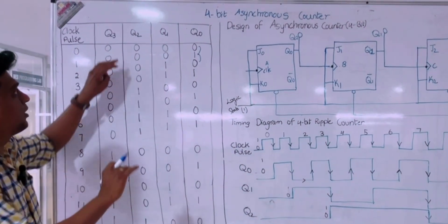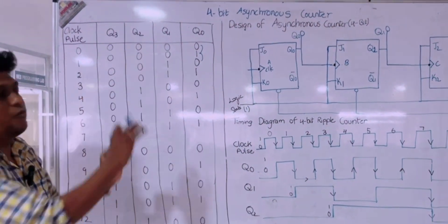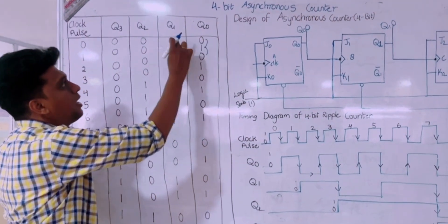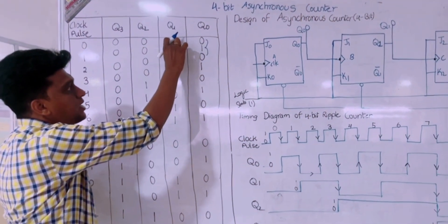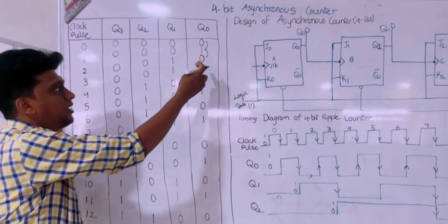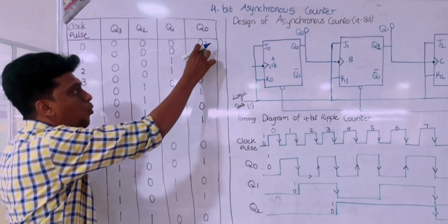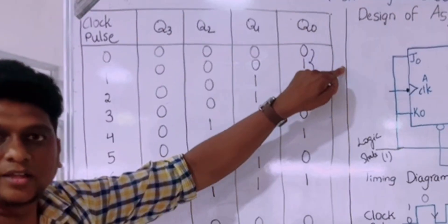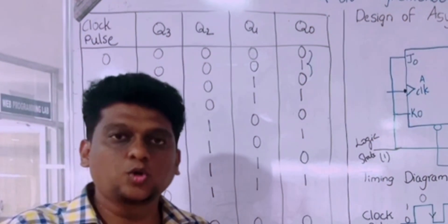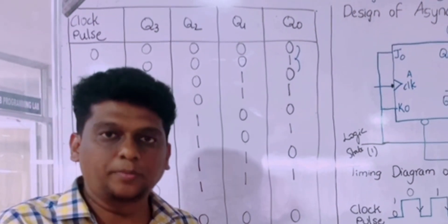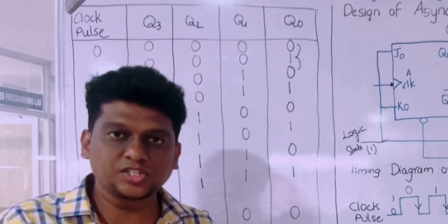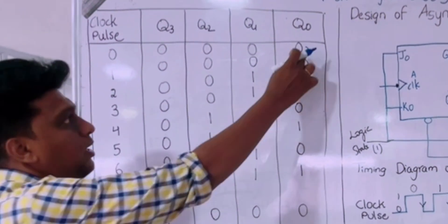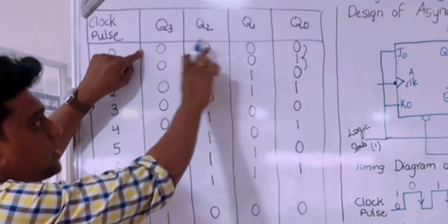For the remaining bits Q3, Q2, Q1, the rule is: whenever the transition in the previous bit is from 0 to 1, the current bit has no change — it stays the same. Whenever the transition is from 1 to 0, the current bit gets complemented. That is the core concept for how the higher-order bits are derived.